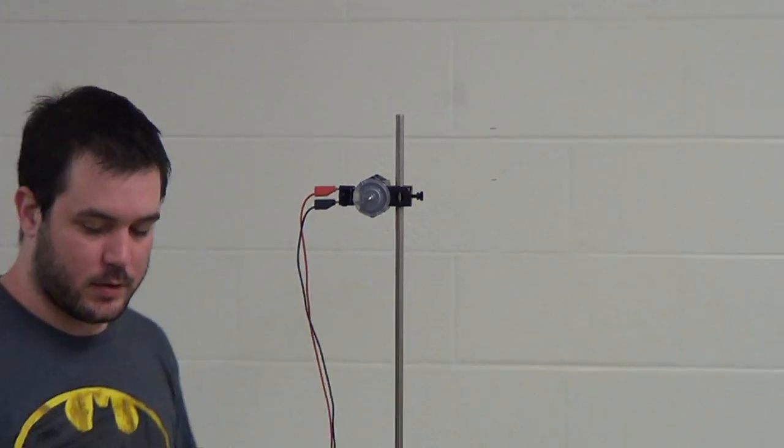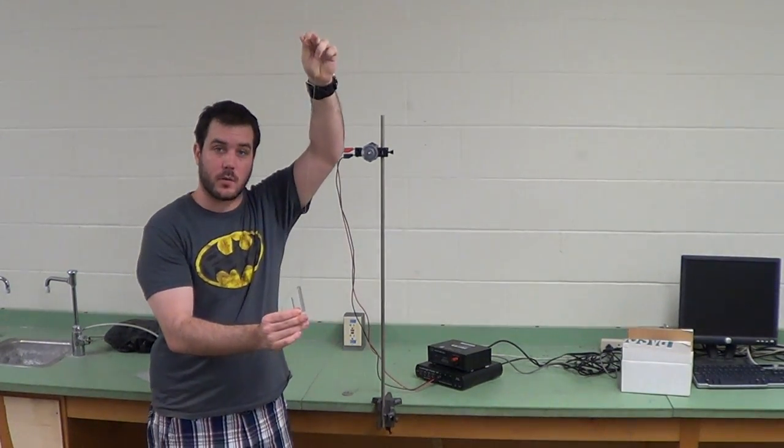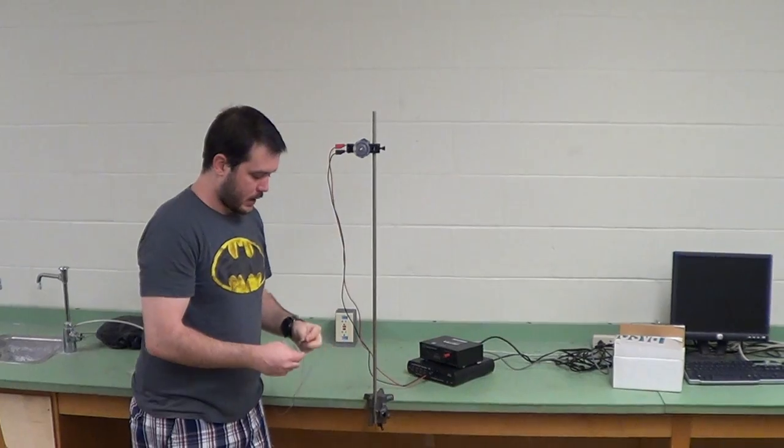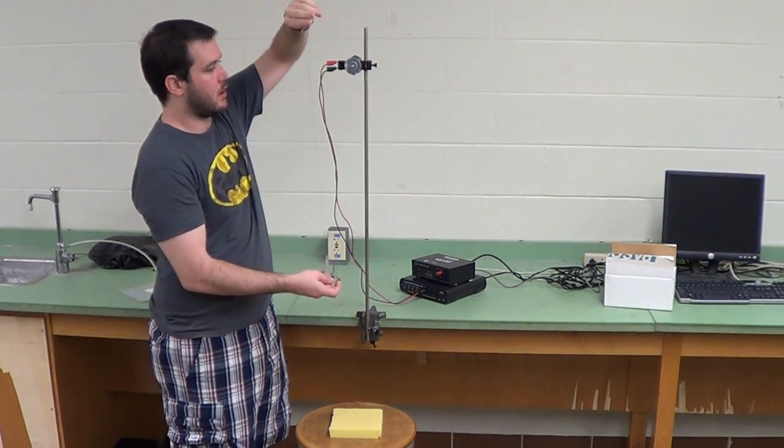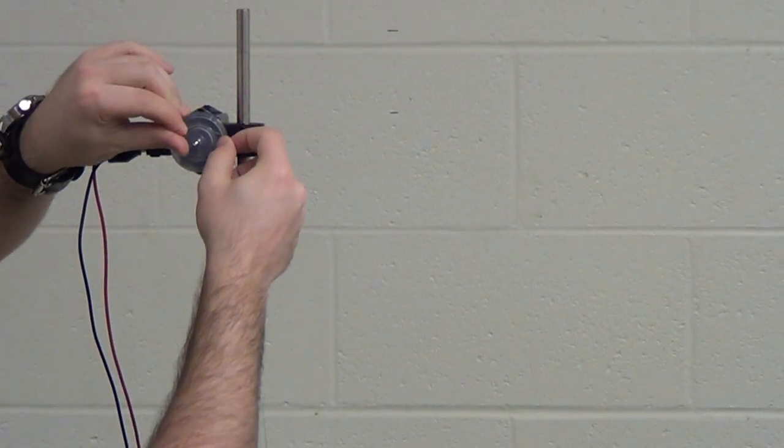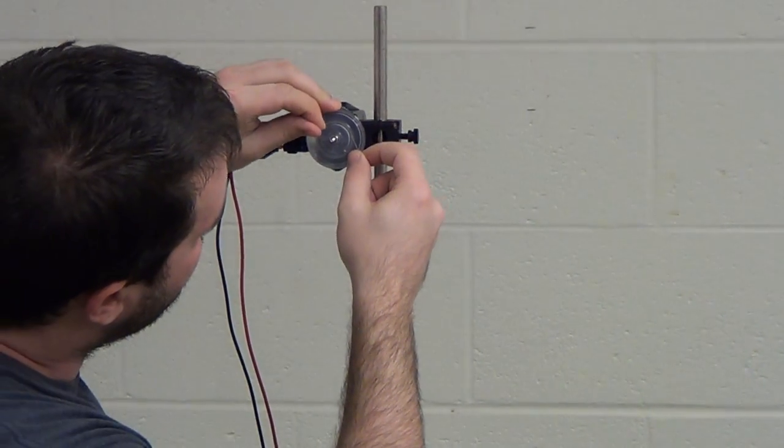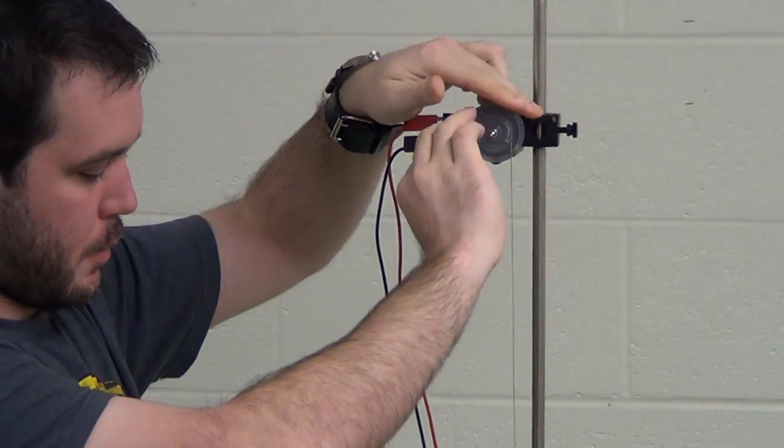Then what we're going to do is we're going to take a hanger, which bear in mind weighs 5 grams, and we're going to put a mass on. Then, using the knots that are already in the string, we're going to hook them on the spindle. And then we're just going to wind it up.